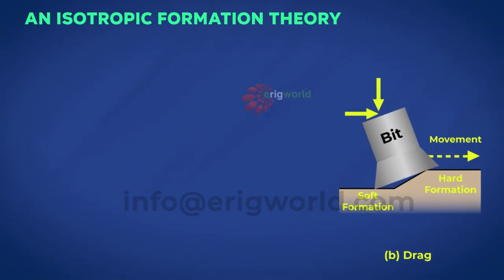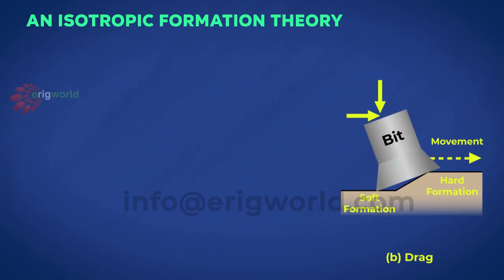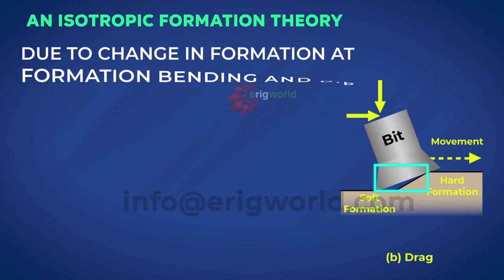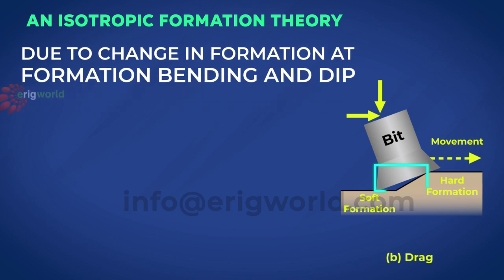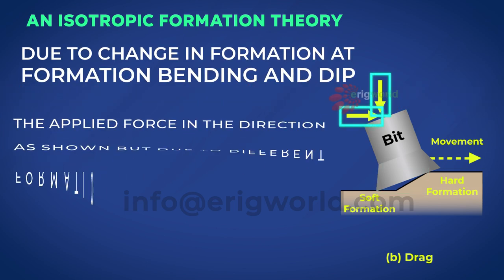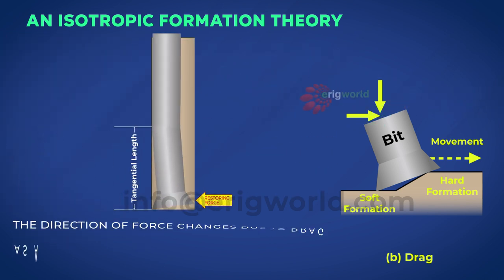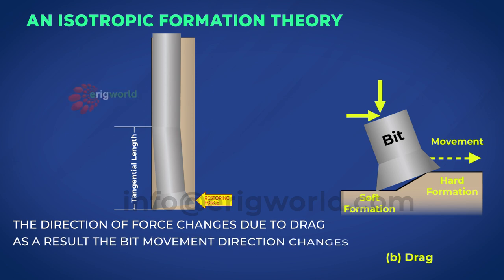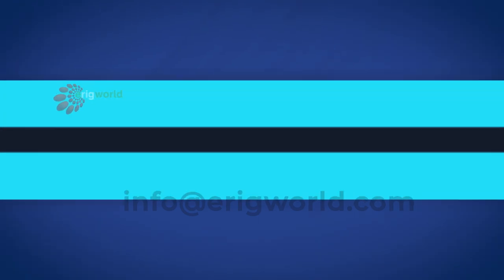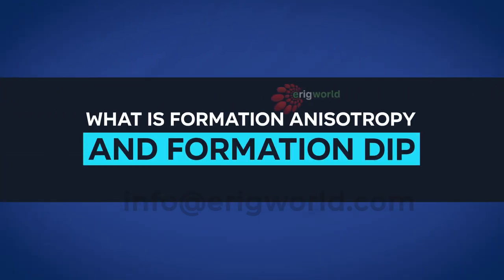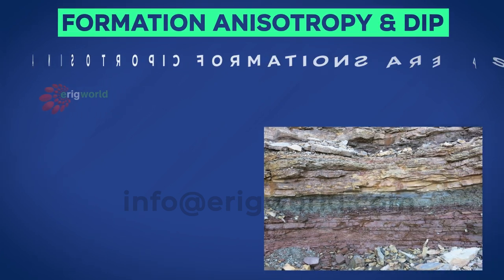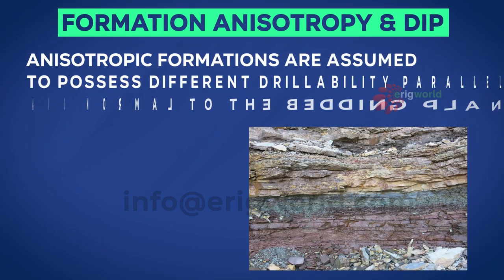As shown in this example, due to change in formation at formation bending and dip, the applied force is in the direction shown. But due to different formation drillability at bending, or due to ledges in the upper section of the wellbore, the direction of force changes due to drag. As a result, the bit movement direction changes.